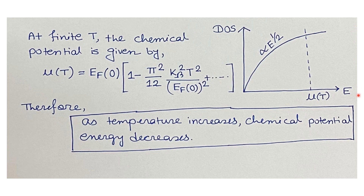The density of states versus energy plot for a three-dimensional fermionic system shows DOS varying as E^(1/2). At finite temperature, the chemical potential is given by μ(T) = E_F0 × [1 − (π²/12) × (k_B T / E_F0)² + higher order terms], where E_F0 is the Fermi energy at T = 0 K. From this expression, the chemical potential decreases as temperature increases, so option A is correct.